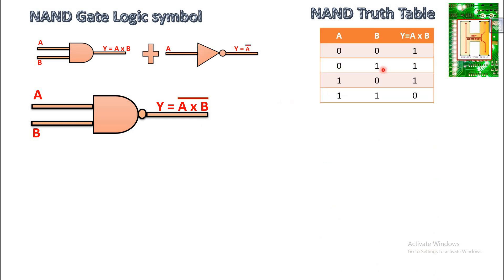Let us see the truth table. When the input is zero zero, the AND gate output is zero, but the NOT gate complements it to one. When input is zero one, AND output is zero, NOT gate makes it logic one. When input is one zero, AND output is zero, NOT gate makes it one. When input is one one, AND gate output is one, but the NOT gate complements it to zero.